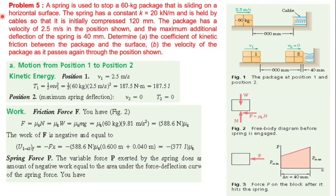This is another very important numerical. A spring is used to stop a 60 kg package that is sliding on a horizontal surface. The spring has a constant k equals 20 kN per meter and is held by cables so that it is initially compressed 120 mm. The package has a velocity of 2.5 m per second in the position shown and the maximum additional deflection of the spring is 40 mm. Determine: (a) the coefficient of kinetic friction between the package and the surface, and (b) the velocity of the package as it passes back through the position shown.